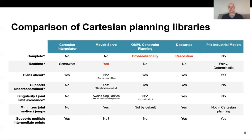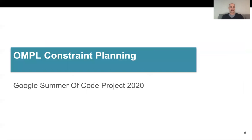Next up, we have Descartes, which is a resolution-complete planner, meaning that it discretizes IK solutions and then searches through all of those to find a feasible path. It's not real-time, but it does plan ahead and provides many of the same properties as the OMPL constraint planner. And finally, we have the PILS Industrial Motion Planner, which is currently being worked on and getting integrated with the rest of MoveIt. It behaves the way that many industrial robot software is expected to behave — it's fairly real-time and deterministic, but it's not a complete planner. So with that, let's go into the details of OMPL constraint planning, and I'll hand it over to Jeroen.